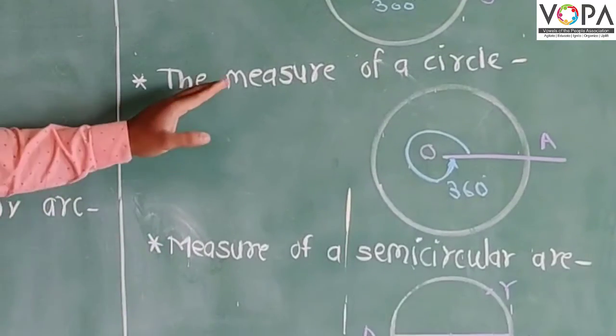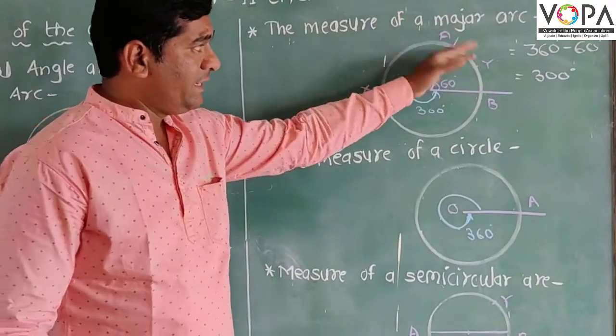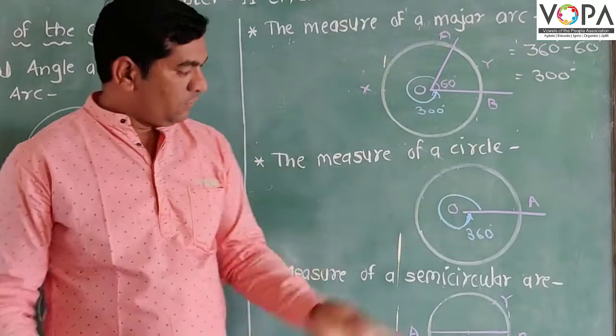The next object is the measure of a circle. Measure of circle, just remind there, just writing here value of 360 degrees. From where we get this value? From this.